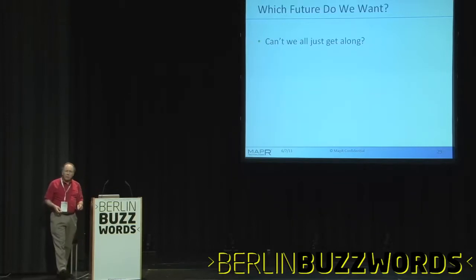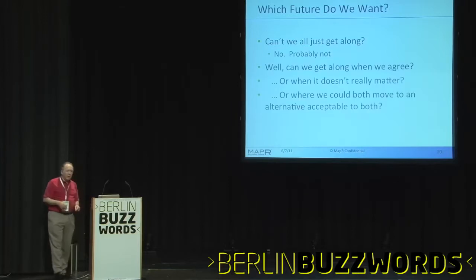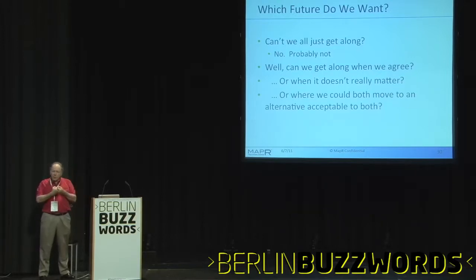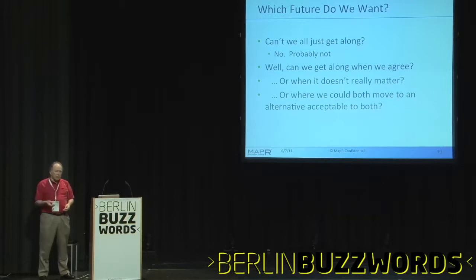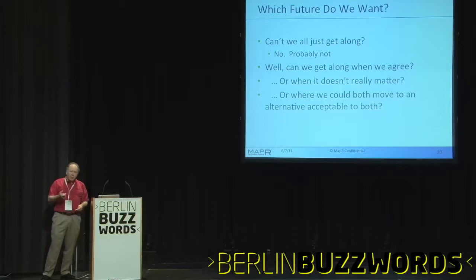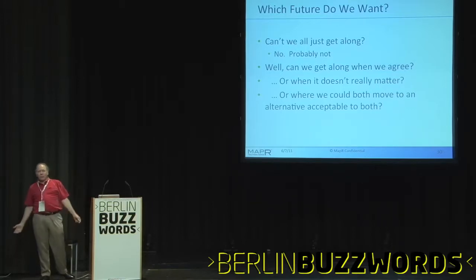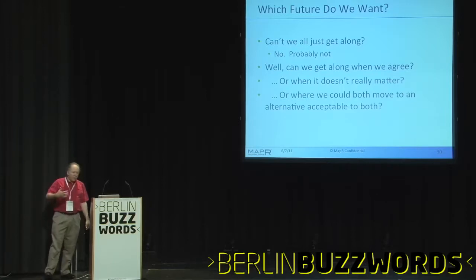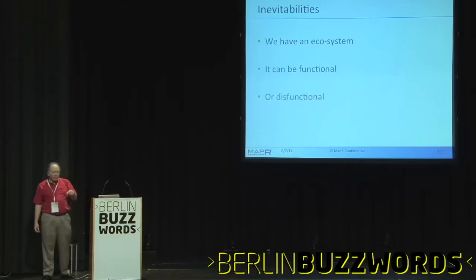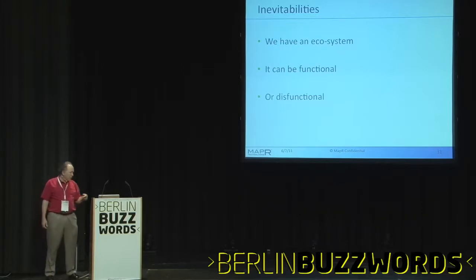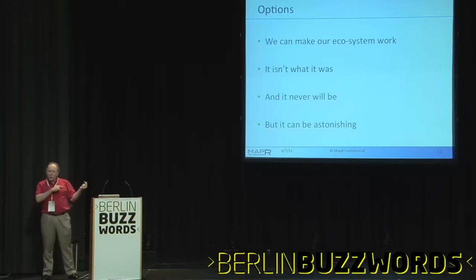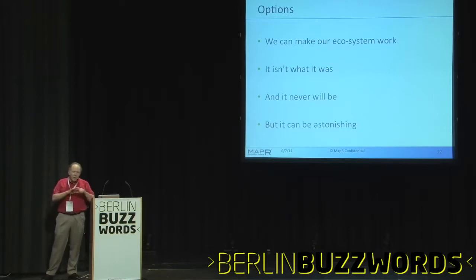Can't we just all get along? Well, the answer is obviously no. We really can't at some level, because there are things that are fundamentally disagreeing — that's why it's an ecosystem, not a community. A community could get along, but an ecosystem is going to have some lions and some lambs, and some of the lambs are going to get eaten. But there are places where we can agree — where it just doesn't matter, or where we could come together. We can admit there are inevitabilities here. We have an ecosystem now; it can be functional or dysfunctional. The world is different, it's never going to be a small thing again. But we really can have a truly astonishing world, and we need to find ways to make that so.